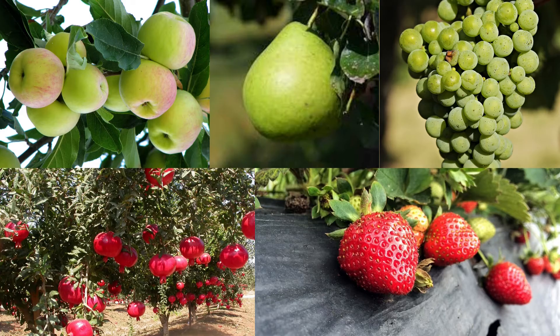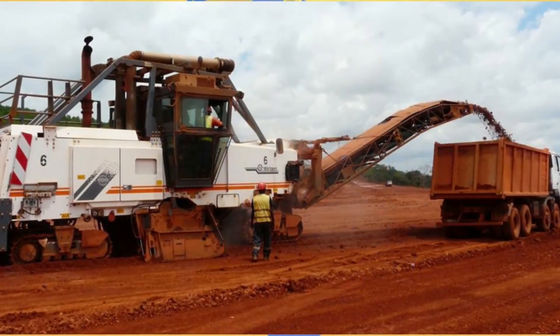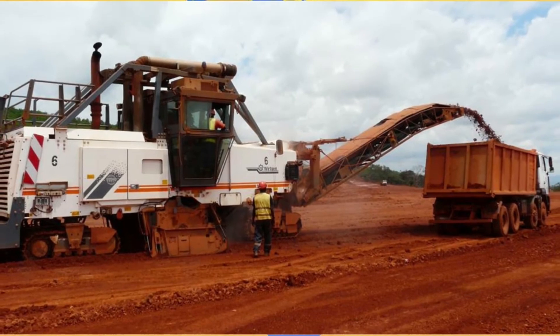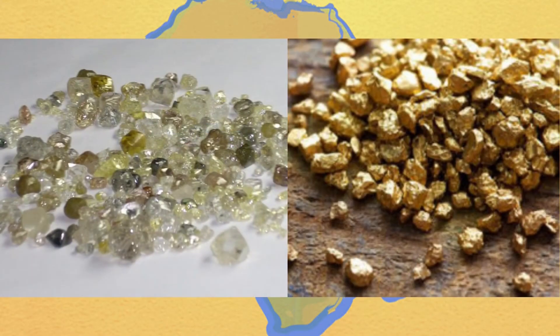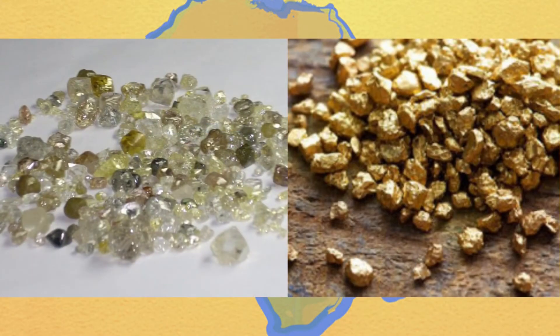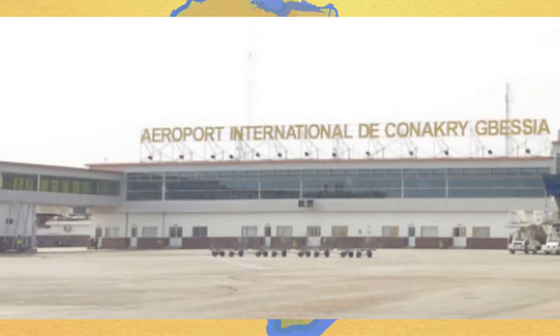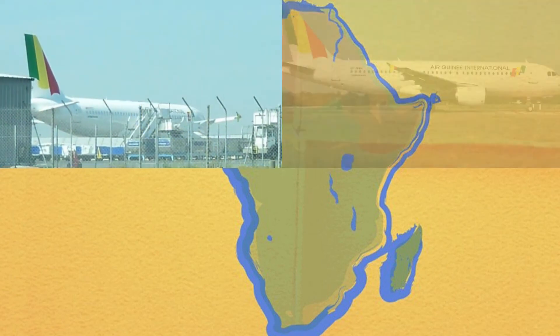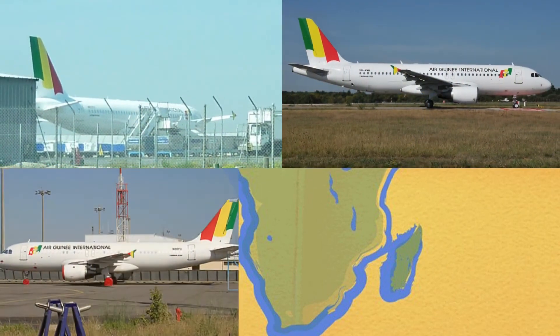Guinea has abundant natural resources, including 25% or more of the world's known bauxite reserves. Guinea also has diamonds, gold, and other metals. Currently, bauxite and alumina are the only major exports. Other industries include processing plants for beers, juice, soft drinks, and tobacco. Conakry International Airport is the largest airport in the country, with flights to other cities in Africa as well as to Europe.